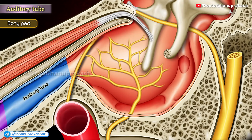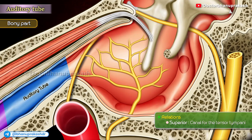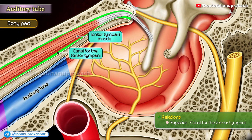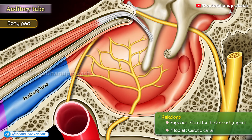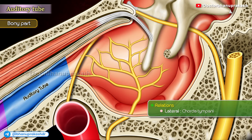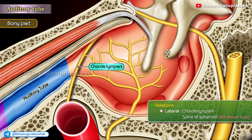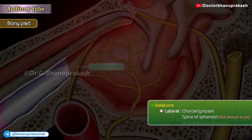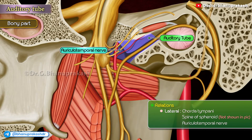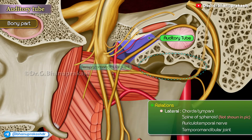Relations of the bony part: Superiorly, it is related to the canal for the tensor tympani. Medially, it is related to the carotid canal. Laterally, it is related to the chorda tympani, spine of the sphenoid, auriculotemporal nerve, and the temporomandibular joint.